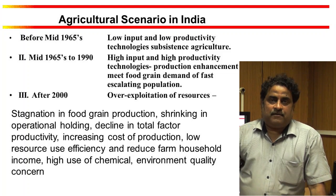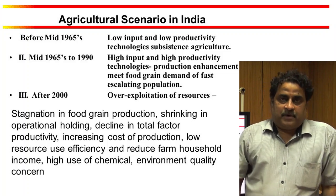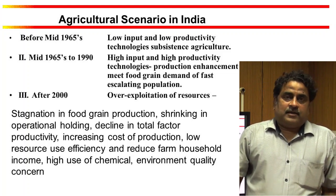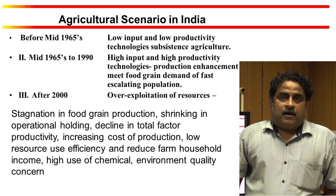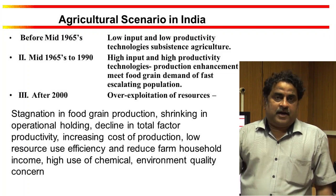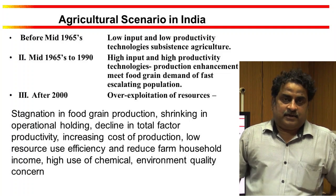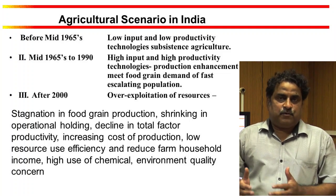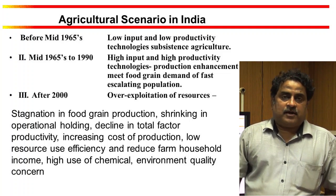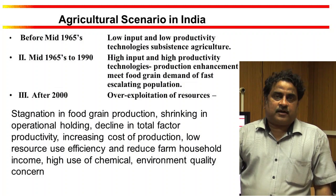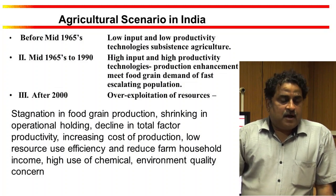But after 1965, the Green Revolution era came. That is the period of high input and high output, where judicious utilization of resources was done to produce high output by the farmers.